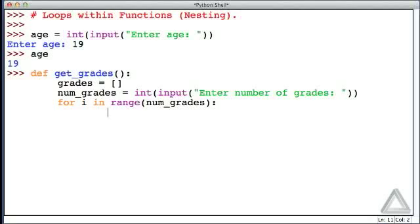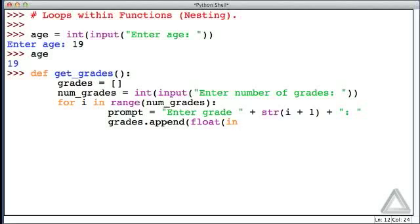When we have a programming construct that requires indentation for its body and that's nested within another programming construct that requires indentation to indicate its body, then we have to indent twice. So now within the body of this for loop let's construct our prompt. Let's say prompt is equal to the string enter grade space plus the string version of the loop variable i plus one, and then that's concatenated with a colon and a space. Then what we'll do is take this grades list, we will append to it the float version of whatever input returns when it's given that prompt. We are calling the append method on the grades list and we pass to it the float value that is obtained from the user when they respond to the prompt.